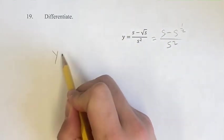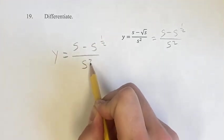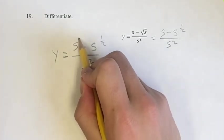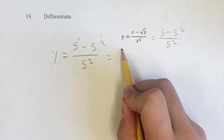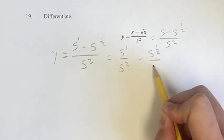Going through here, we have y, which is writing it in a bigger form, s minus s to the 1 half over s squared. If you think of this as s to the 1 power, then this is s to the 1 over s to the 2 minus s to the 1 half over s to the 2.